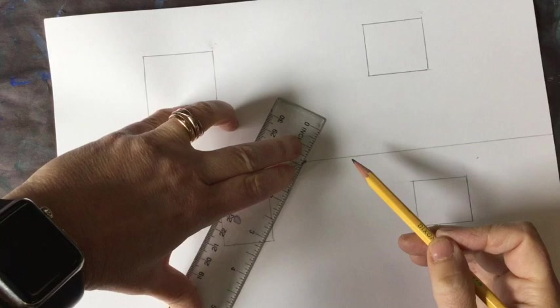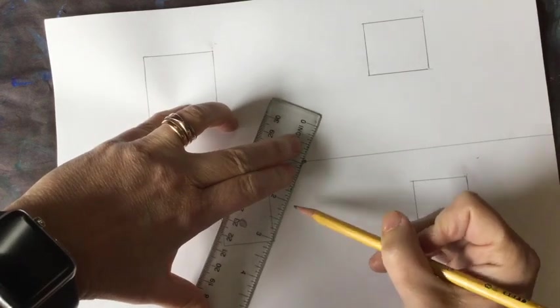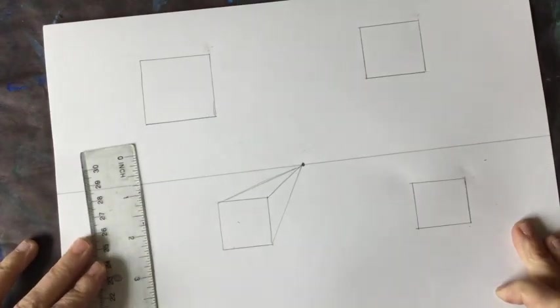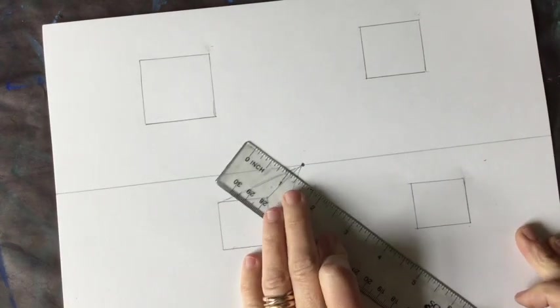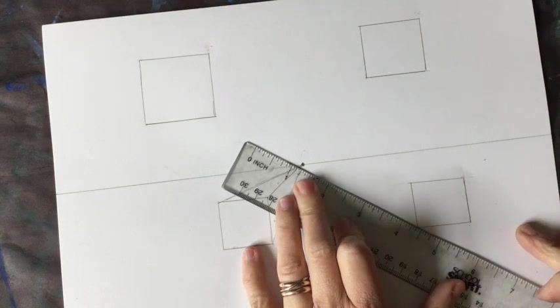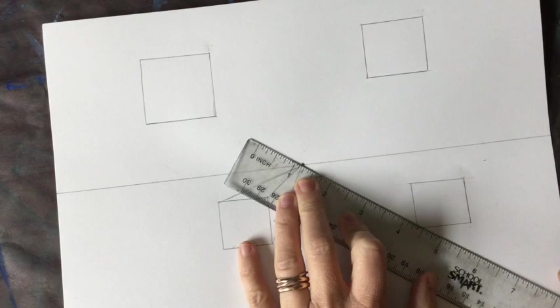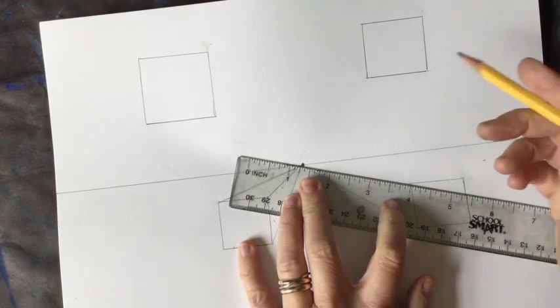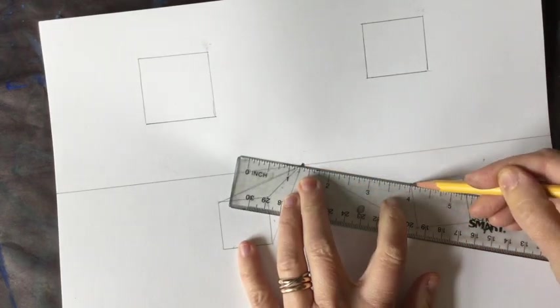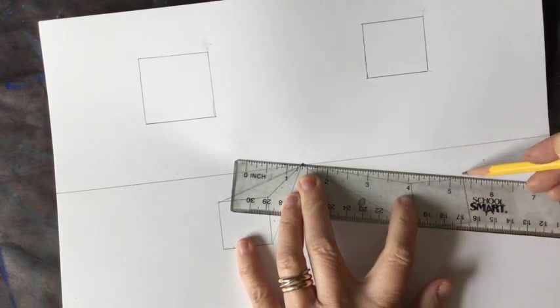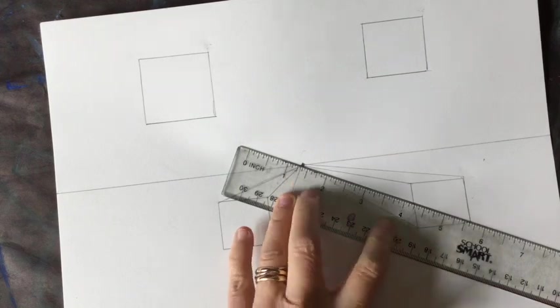Pivot down to this corner and draw a line. Starting to look three-dimensional. Now I can come over to here and do it with this one.